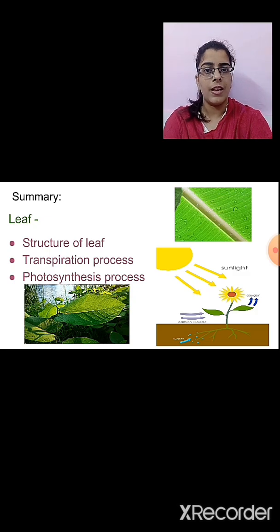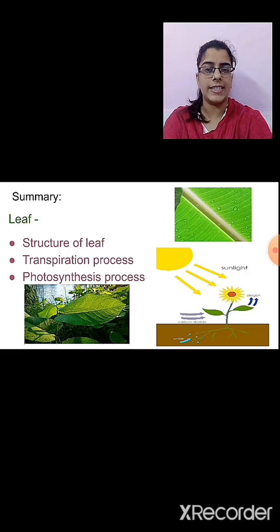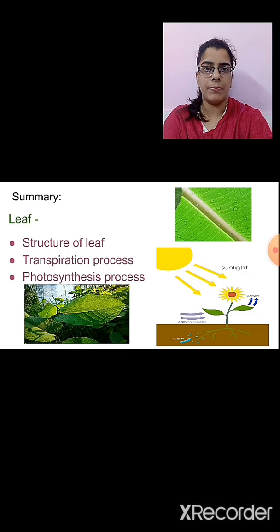On the leaf, we can see different lines. These lines are known as veins. In the leaf, there is a prominent line in the middle — this line is known as midrib. The design that is made by the veins on the leaf is known as leaf venation.